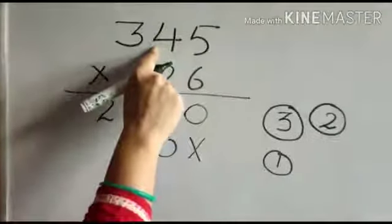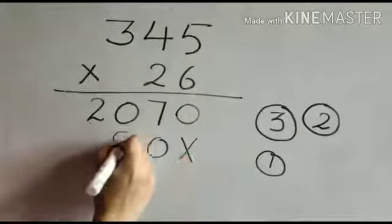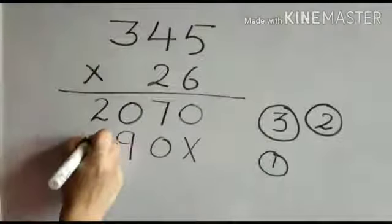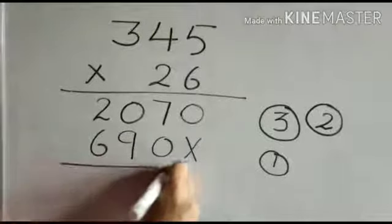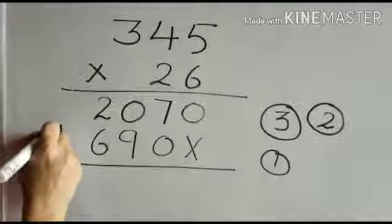2 times 4 is 8, plus 1 equals 9. 2 times 3 is 6. No further carry. Now we add both these numbers.